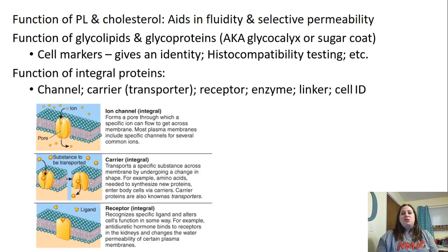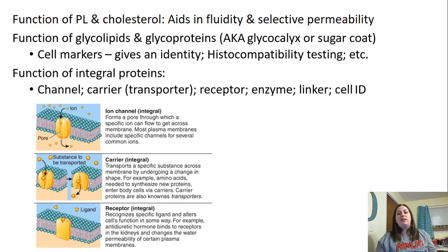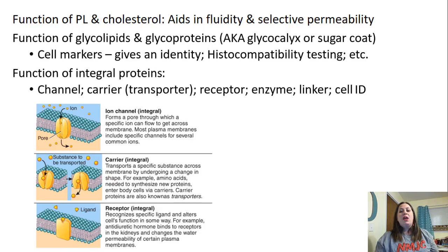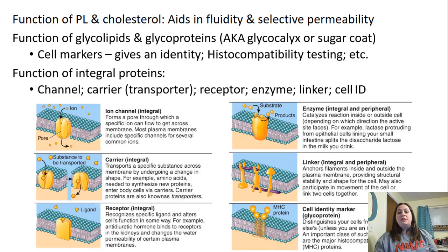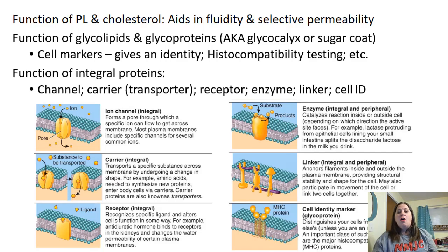Integral proteins function in several ways. They can act as a channel, allowing things to move across the membrane without passing through the fats. They can be carrier proteins that transport molecules from one side to the other. They can act as receptors, receiving information and passing it through the membrane. They can also act as enzymes speeding up reactions, as links anchoring cells together, or for cell identity when they have carbohydrates attached as glycoproteins.